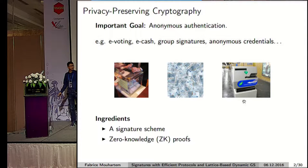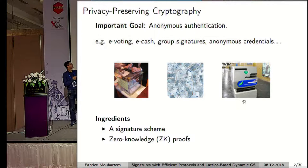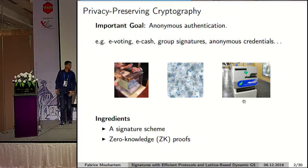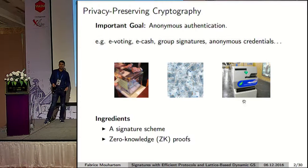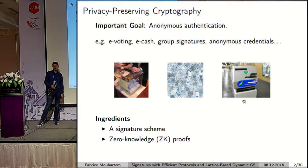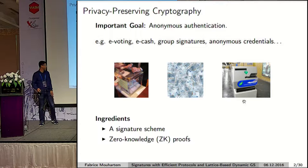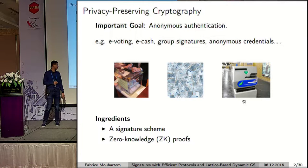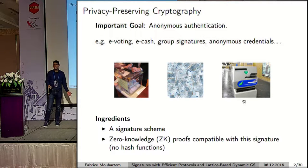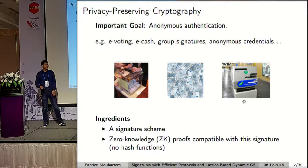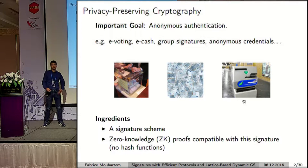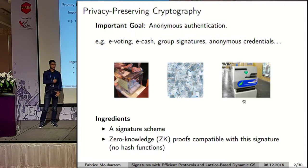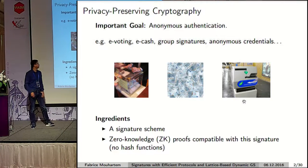In order to build this so-called privacy-preserving cryptography, we need two main basic building blocks: a signature scheme and also a zero-knowledge proof, which should be compatible with the signature scheme and allow us to prove statements about it.